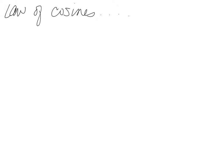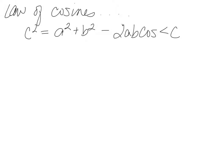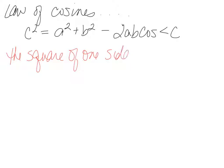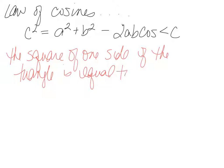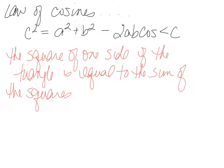Now let's go over the Law of Cosines. C squared equals A squared plus B squared minus 2AB cosine angle C — which looks a lot like the Pythagorean theorem. What we really have is: the square of one side of the triangle equals the sum of the squares of the other two sides, minus twice the product of those other two sides...